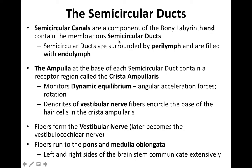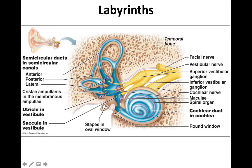Moving to the semicircular canals, the ducts within them are surrounded by perilymph and filled with endolymph, very similar to the cochlea. One structure from lab is the ampulla — the swelling at the base of each duct, still considered part of the membranous labyrinth. The ampulla connects the semicircular ducts to the vestibule, specifically to the utricle, and all of this endolymph can circulate and move as you move, with fluid passing past the ampulla.